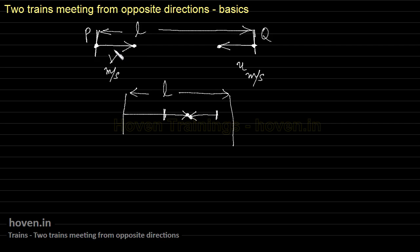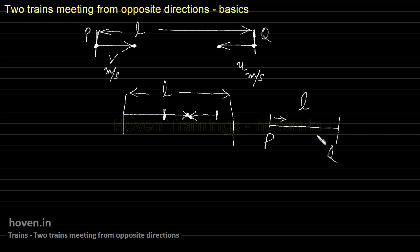In such types of questions, usually the lengths of the trains themselves are not taken into account — the lengths are not given. We have to treat the two trains as two dot objects. So basically, if the distance between points P and Q is L, and one dot starts from P moving right and another from Q moving left at speeds V and U respectively, we find when and where these two dots meet.